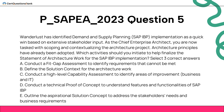Wanderlust has identified demand and supply planning — SAP IBP implementation — as a quick win based on extensive stakeholder input. As the Chief Enterprise Architect, you are now tasked with scoping and contextualizing the architecture project. Architecture principles have already been adopted. Which activities should you initiate to help finalize the statement of architecture work for the SAP IBP implementation?